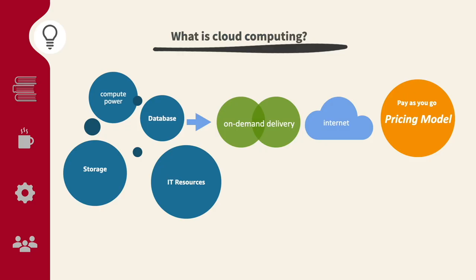In this lesson we will learn what cloud computing is — basically, on-demand delivery of IT resources including compute power, database, storage, and other IT resources in a pay-as-you-go pricing model. This concept is very easy to understand because it is similar to the utility model we all use. If you want gas heating for your house, you subscribe to a gas provider. If you want internet at home, you subscribe to an ISP with a pay-as-you-go model. Similarly, in cloud computing we lease IT resources from a provider like AWS.